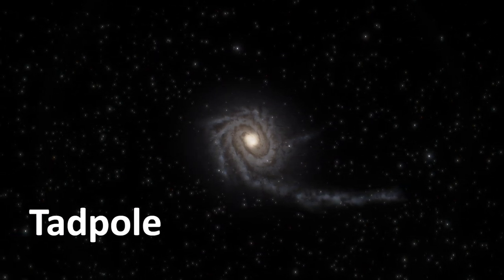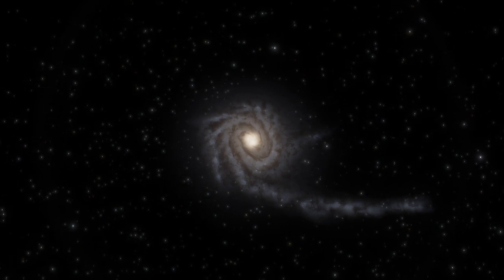This odd-looking galaxy that appears to be swimming through space is called the Tadpole, a disrupted barred spiral galaxy about 400 million light-years away in the northern constellation Draco.